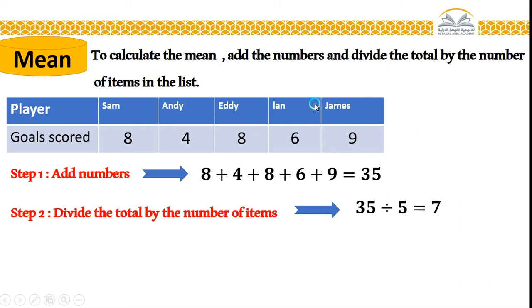So 35 by five. From where get coming five? Because I have here five players: one, two, three, four, five. So 35 divided by five gives me seven. Is it the mean? Yes. This is our mean.